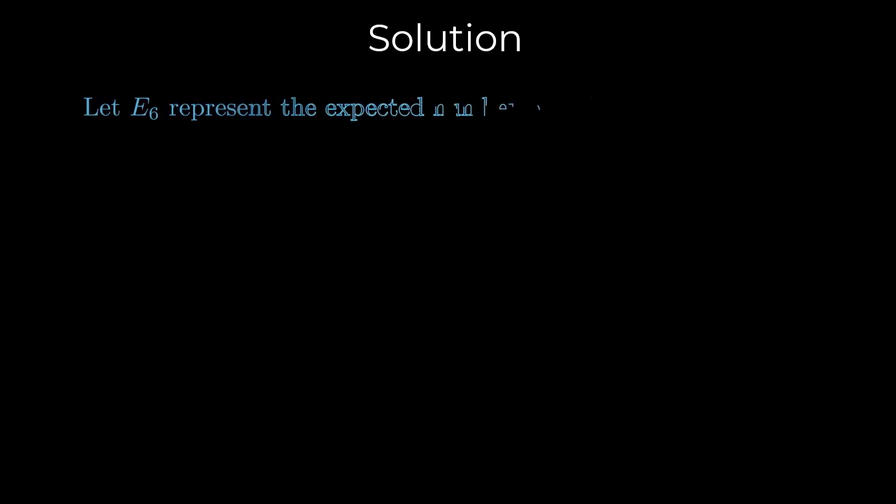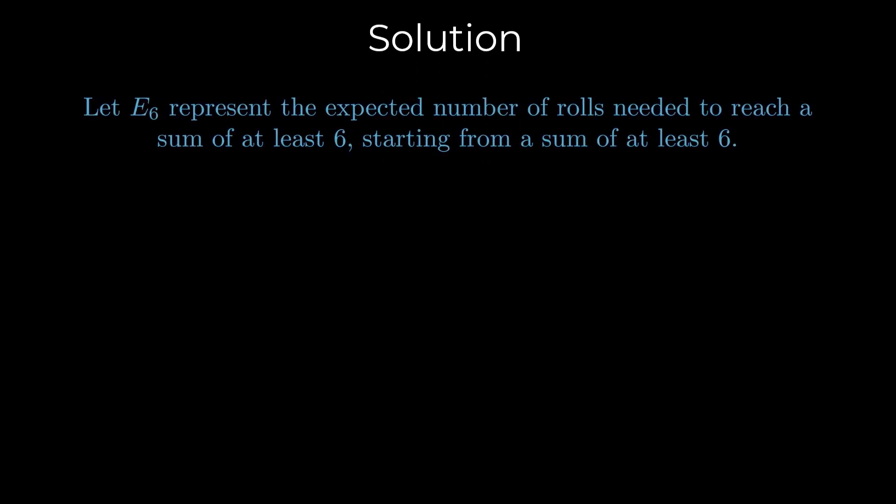Here's the solution. Let E6 represent the expected number of rolls needed to reach a sum of at least six, starting from a sum of at least six. Clearly, E6 is zero since no additional rolls are needed once the sum has already reached at least six.